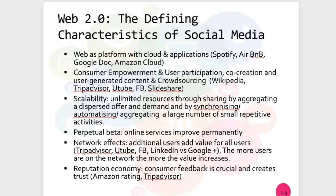Users are co-creating by generating content — videos, texts, photos — and also by doing crowdsourcing. For example, on TripAdvisor, you have a lot of content related to evaluations, product evaluations. The engagement or participation comes through user participation when they write reviews for hotels or other services offered on TripAdvisor.